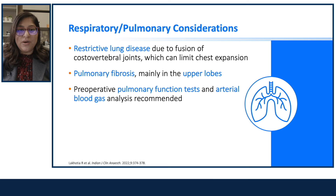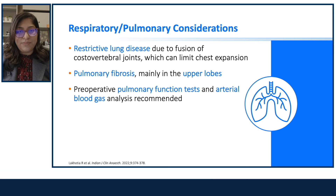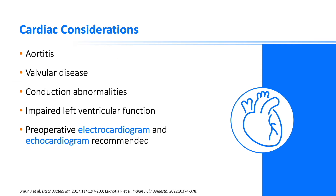Pulmonary considerations include restrictive lung disease due to fusion of costovertebral joints limiting chest expansion, and pulmonary fibrosis mainly in the upper lobes. Preoperative pulmonary function tests and arterial blood gas analysis are recommended. Cardiac considerations include aortitis, valvular disease, conduction abnormalities, and impaired left ventricular function. A preoperative electrocardiogram and echocardiogram are recommended.